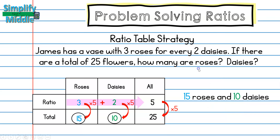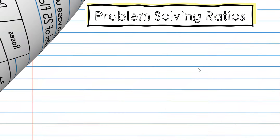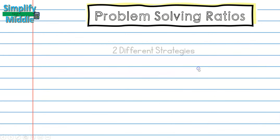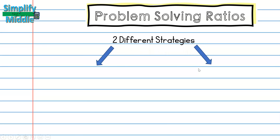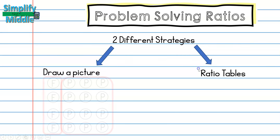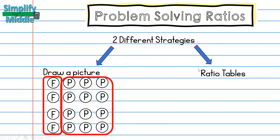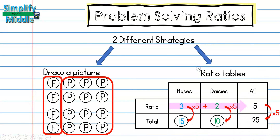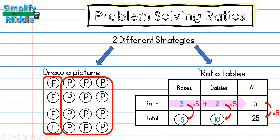Let's recap. We learned two different strategies for solving ratios: drawing a picture and ratio tables. We know that ratio tables are most beneficial when we have large numbers because there are fewer items to draw.